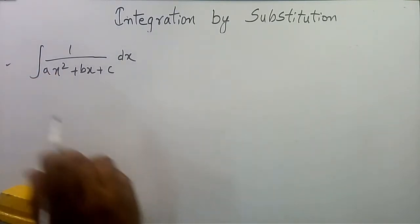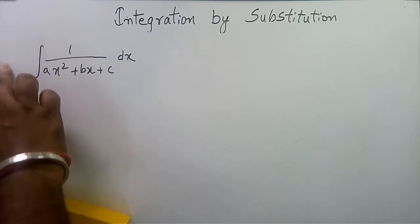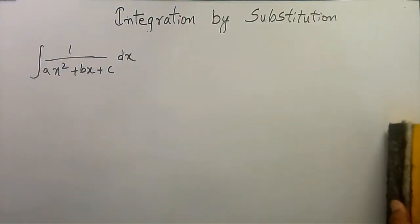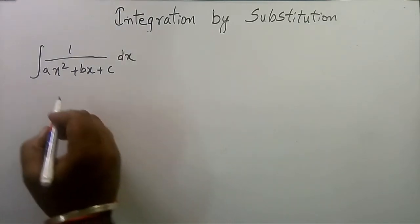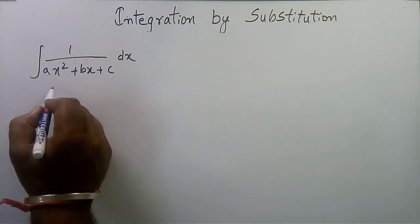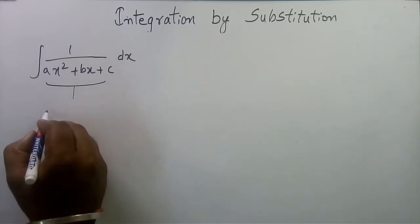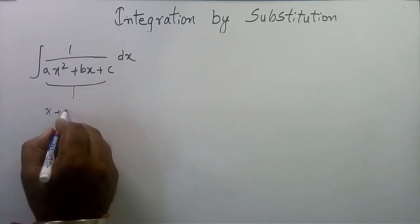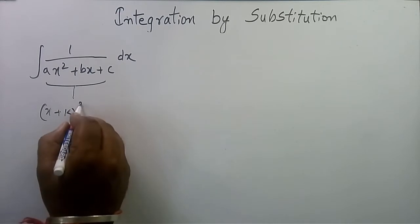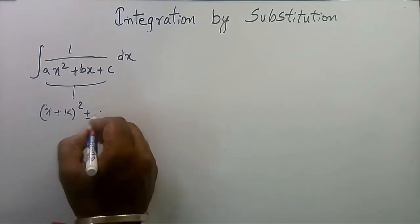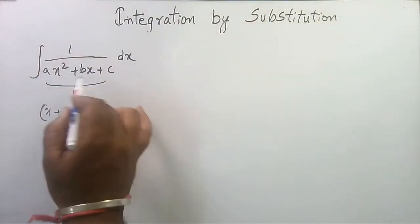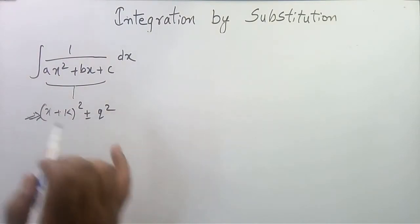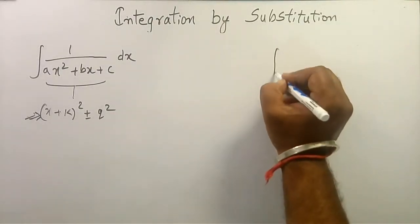There are lots of methods for solving such types of problems, but I am suggesting a method where we try to make this expression look like (x + k)² plus or minus q². We want to convert ax² + bx + c into this form.